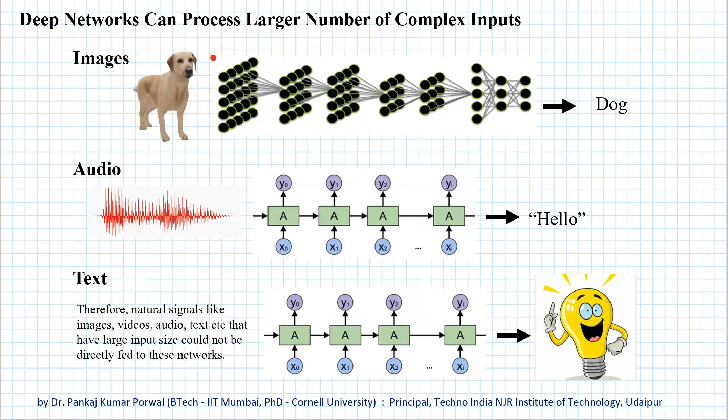We could feed the raw data itself like images, audio signal, and text. And this really revolutionized deep learning.